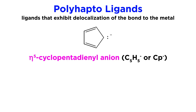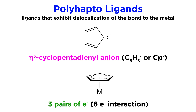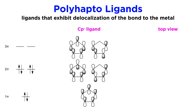Then we have the cyclopentadienyl anion, or C5H5⁻. This is actually an exceptionally common ligand, and it is an eta5 ligand, so all five carbons are interacting with the metal, or essentially the delocalized pi system. This ligand will donate three pairs of electrons to the metal, and we depict it with the five carbon ring and a circle in the middle representing the pi system, and a line from the center of the pi system to the metal.